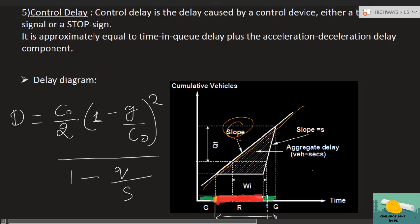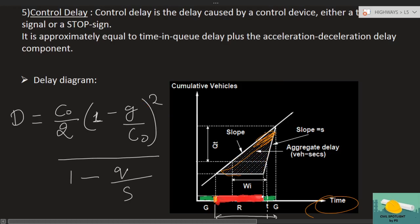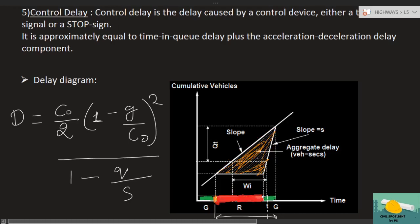The area under this curve mathematically represents something, and the slope of this curve represents something — we will look at both. The average delay in vehicle-seconds is the area under the curve, because the Y-axis is cumulative vehicles and the X-axis is time. For example, if this graph is drawn for 200 vehicles and a delay of 50 seconds occurred, the area under the curve tells us the total delay. From that we can find the average delay per vehicle.